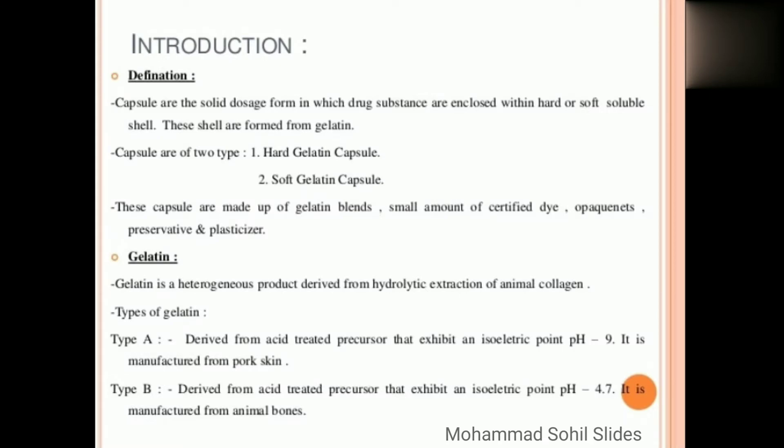Then what do you mean by gelatin? Because capsule shells are formed from gelatin. Gelatin is a heterogeneous product derived from hydrolytic extraction of animal collagen. There are two types of gelatin. Type A: it is derived from acid-treated precursor that exhibits an isoelectric point at pH 9. It is manufactured from pork skin.